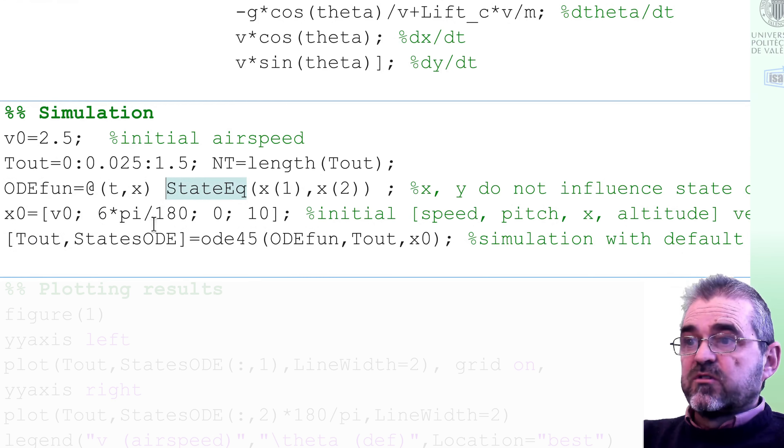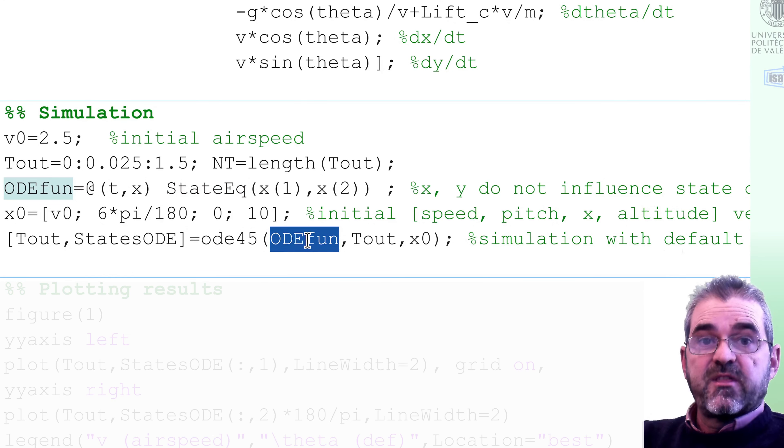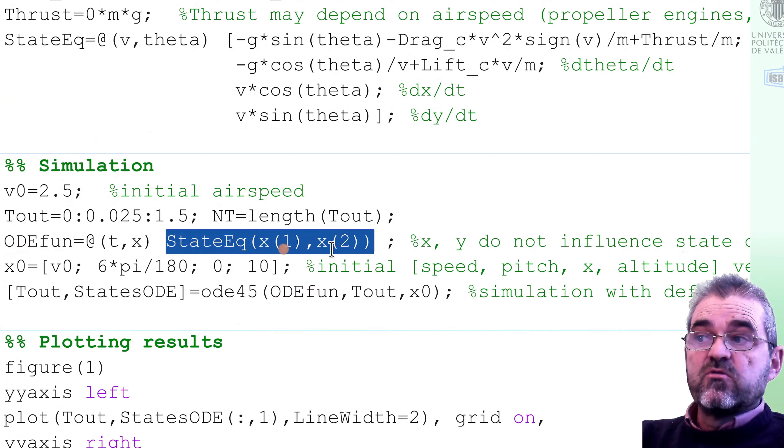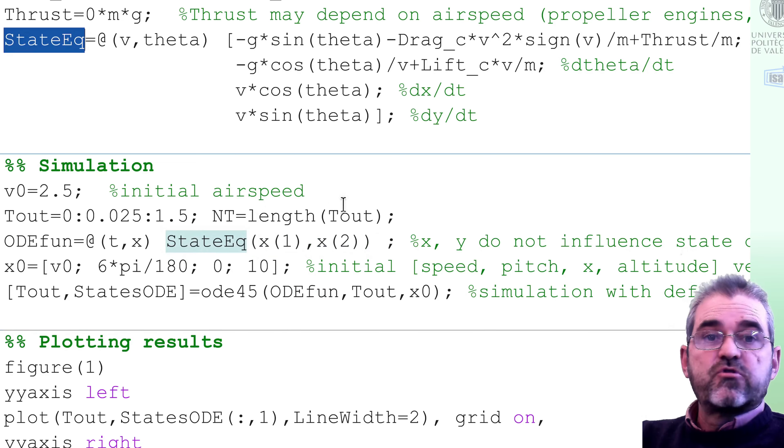Then the output of ODEFUN must be a four-dimensional vector with the state time derivatives. So I will just call the state equation with only the two first components of the state. X1 is airspeed. X2 is pitch. Because those two numbers are the only ones I need in order to compute the four state derivatives.